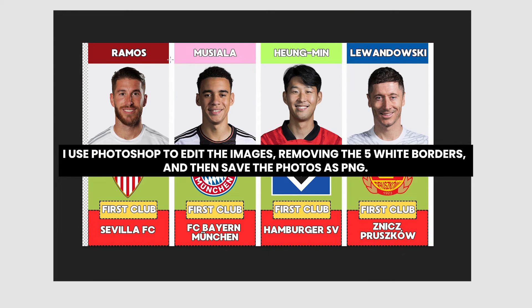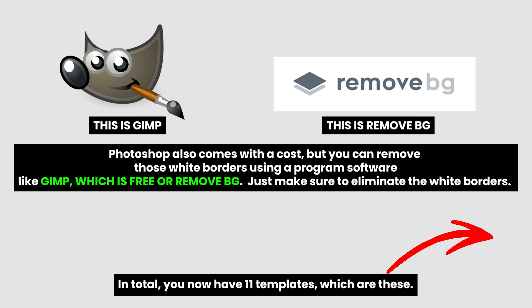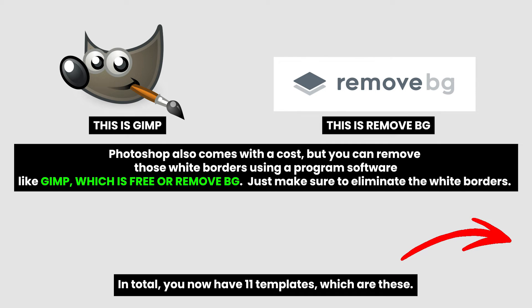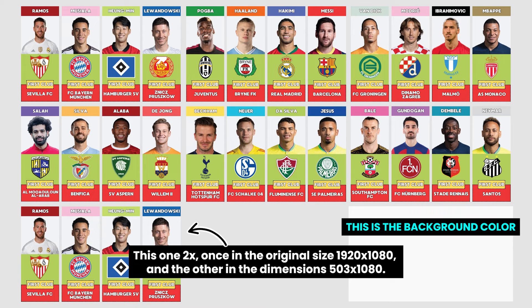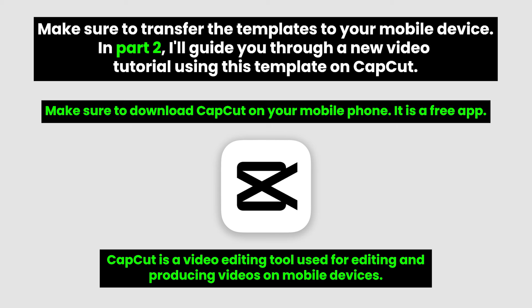Since I don't have the paid version, I'll save as a JPG image and remove the white borders using Photoshop. Photoshop also comes with a cost, but you can remove those white borders using free software like GIMP or Remove.bg. Just make sure to eliminate the white borders. In total you now have 11 templates. Make sure to transfer the templates to your mobile device. In part two I'll guide you through a new video tutorial using this template on CapCut.